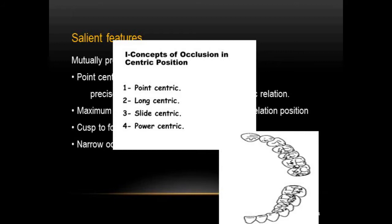Slight-centric is where the supporting cusp may contact the perimeter of the slopes of the opposing cusp. Power-centric is where the patient closes against a force into a favorite or most comfortable position in which they can bite the hardest. These are the concepts of occlusion in centric position — you can expect this as a viva question.